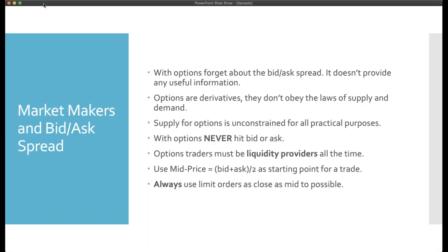The second misconception to remove: don't worry about bid or ask, or even the spread between them. Bid and ask prices in options don't provide useful information, because options are derivatives — they follow stocks or an index and do not obey the laws of supply and demand. You can have an infinite number of people trying to buy an option and it doesn't mean the price goes up, because options are unconstrained.